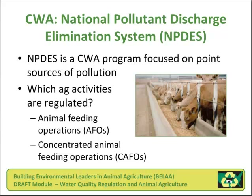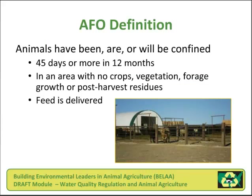Clean Water Act and the National Pollutant Discharge Elimination System. NPDES is a Clean Water Act program focused on point sources of pollution. Which agricultural activities are regulated? Animal feeding operations and concentrated animal feeding operations. The definition of an animal feeding operation is a place where animals have been, are, or will be confined for 45 days or more in a 12-month period, with no crops, vegetation, forage, or post-harvest residues, and where feed must be delivered to the animals. The image shows a small beef confinement area in the American West where all nutrition is provided by imported feed — a hard-packed, engineered lot that does not sustain plant growth.